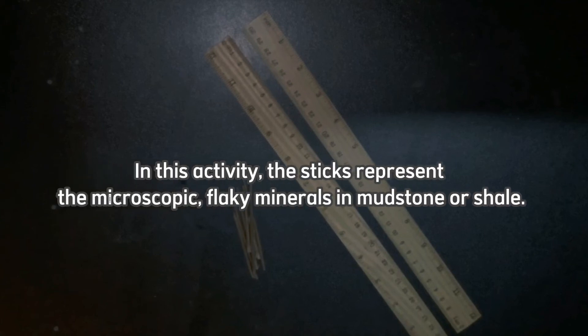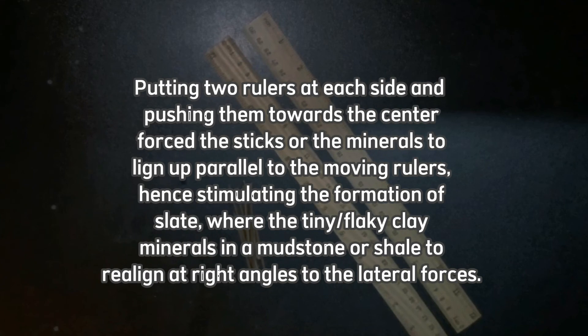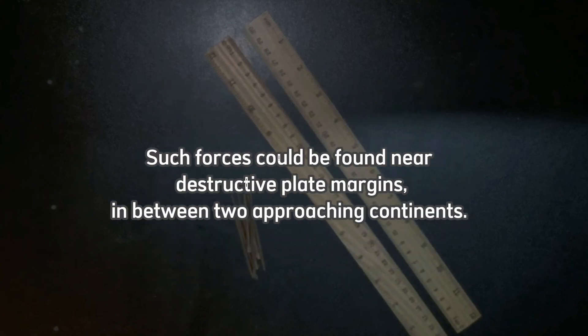In this activity, the sticks represent the microscopic flaky minerals in a mudstone or shale. Putting two rulers at each side and pushing them towards the center forced the sticks, or the minerals, to line up parallel to the moving rulers — hence simulating the formation of slate, where the tiny flaky clay minerals in a mudstone or shale realign at right angles to the lateral forces. Such forces could be found near destructive plate margins in between two approaching continents.